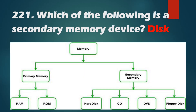Question No. 221: Which of the following is a Secondary Memory Device? Hard Disc, CD, DVD, and Floppy Disc — all these are Secondary Memory Devices. Primary memory includes RAM and ROM.